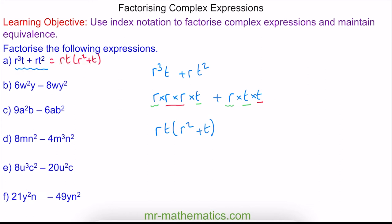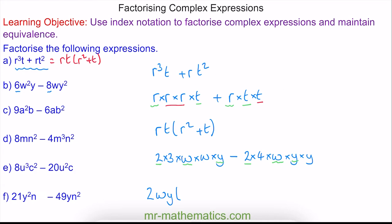For question B, we know that 2 is common to the 6 and the 8, so we can write this out as 2 multiplied by 3 to make the 6, multiplied by w and y, take away 2 times 4 to make the 8, multiplied by another w and y squared. The 2 is common so it goes on the outside, a w is also common so w joins the 2, and a y is common so we have a y on the outside. On the inside of our brackets we have the remaining terms: 3w minus 4y.